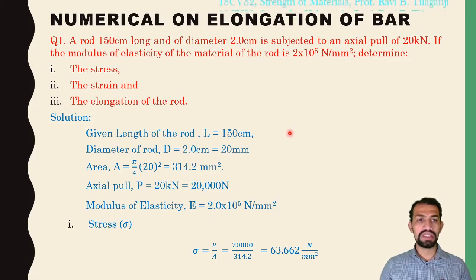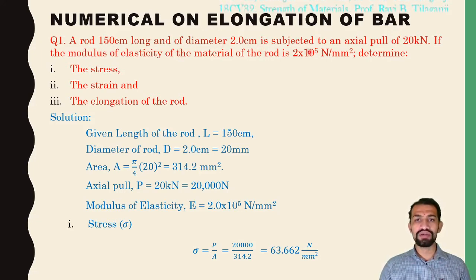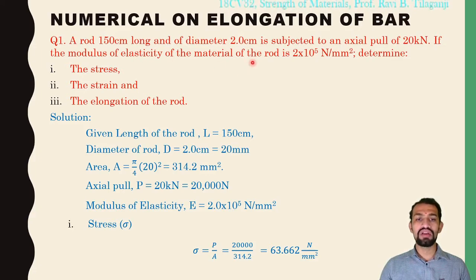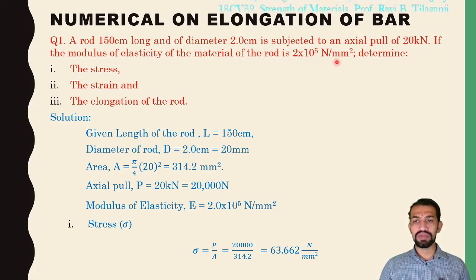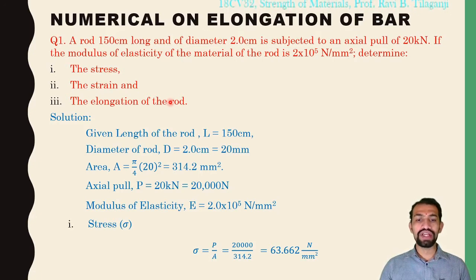The first numerical: a rod 150 centimeters long and of diameter 2 centimeters is subjected to an axial pull of 20 kilo Newtons. If the modulus of elasticity of the material of the rod is 2×10⁵ Newton per mm², then we need to determine stress, strain, and the elongation of the rod.